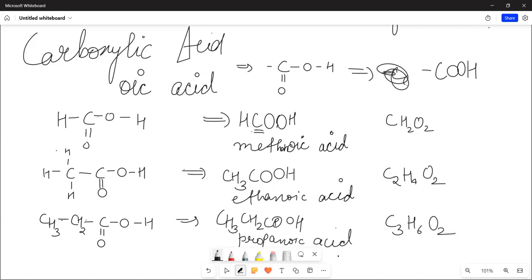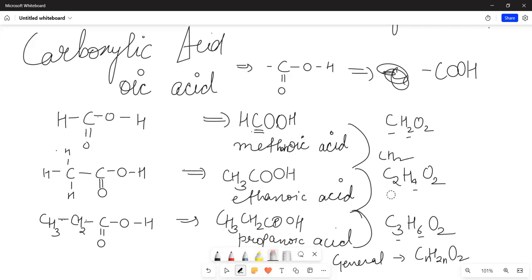So the general formula is CnH2nO2. Look, O2 is coming in everything. When carbon is 1, then hydrogen is 2. When carbon is 2, then hydrogen is 4. When carbon is 3, then hydrogen is 6. So because it is in this way, what is the general formula? CnH2nO2. The two consecutive members, what will the gap remain in them? CH2.